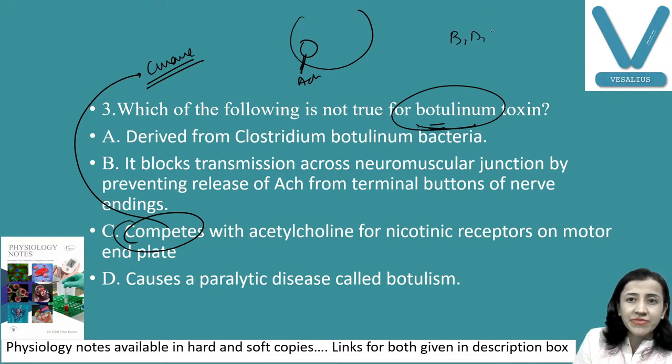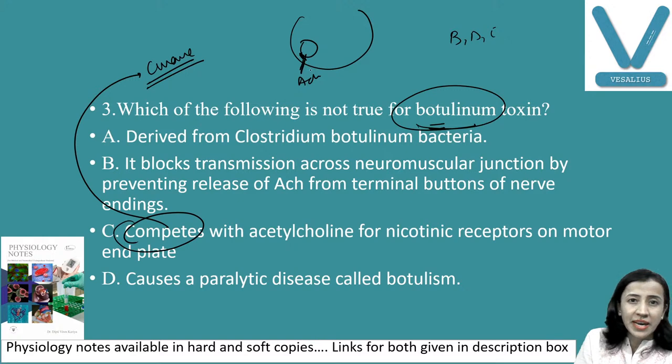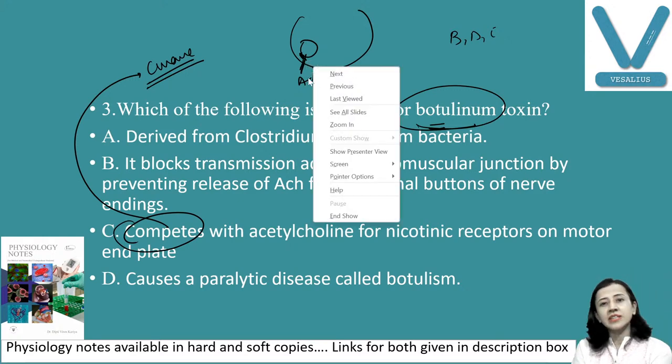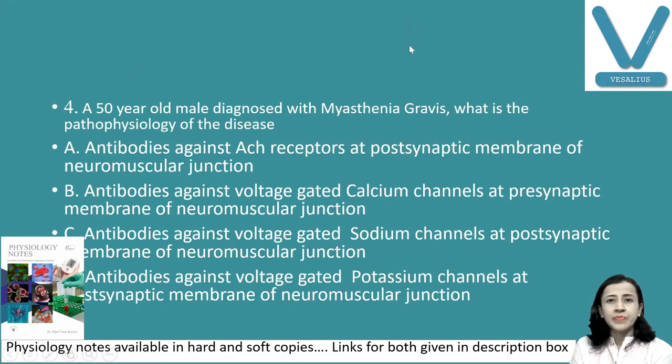Which of the following is NOT true for botulinum toxin? Options include: derived from Clostridium botulinum bacteria; blocks transmission across the neuromuscular junction by preventing release of acetylcholine; competes with acetylcholine. The answer is: 'competes with acetylcholine' is NOT true for botulinum toxin — competition is the action of curare. Botulinum toxin prevents the release of acetylcholine by inactivating synaptobrevin (types B, D, F, G) or syntaxin (type C).